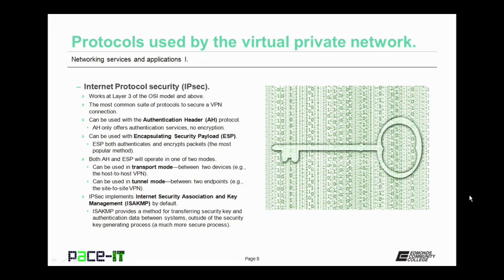Both AH and ESP will operate in one of two modes. The first mode is transparent mode, between two devices, as in a host-to-host VPN. Or they can be used in tunnel mode, which is between two endpoints, as in a site-to-site VPN. IPsec implements Internet Security Association and Key Management, ISAKAMP, by default. ISAKAMP provides a method for transferring security key and authentication data between systems outside of the security key generating process, making it a much more secure process.